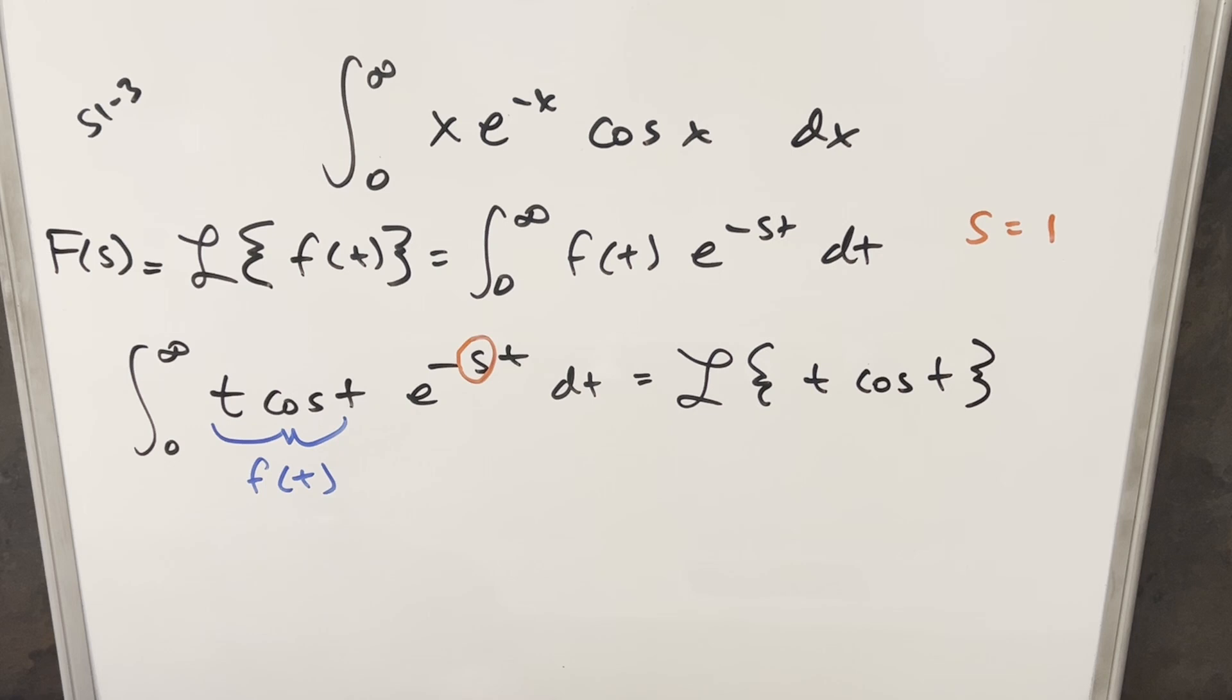But now this is pretty nice because we actually have a couple formulas we can use. First of all, we have a formula for just the Laplace transform of, say, let's say cosine a t, even though in our case a is just 1 here. And the formula for this is just going to be s over s squared plus a squared.